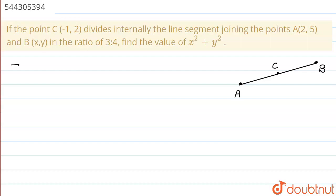Here in the right side, you can see a line segment joining points A and B. What is A point? That is (2, 5). And the point B is (x, y). And the point C is (-1, 2). Now, it's been given that this point C is dividing this line segment AB in the ratio of 3 is to 4.